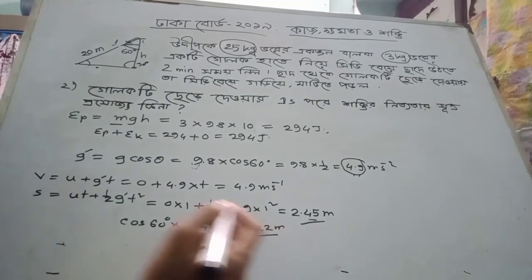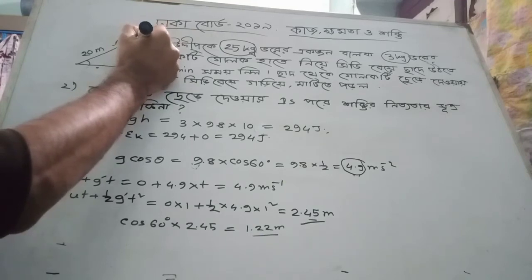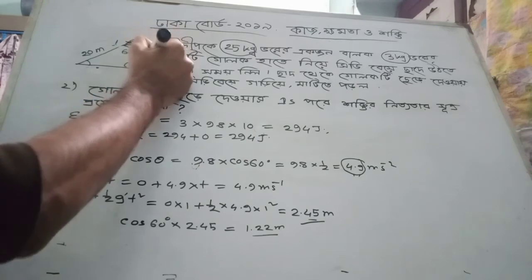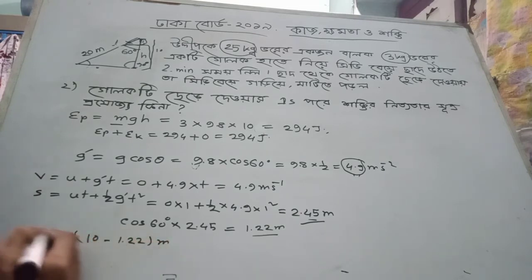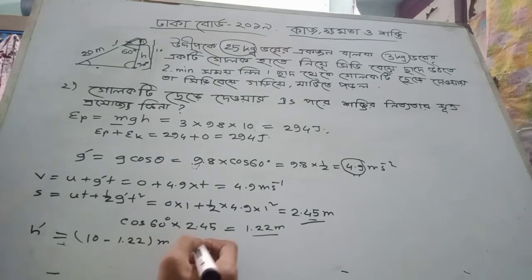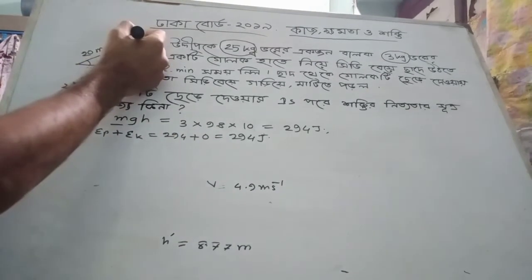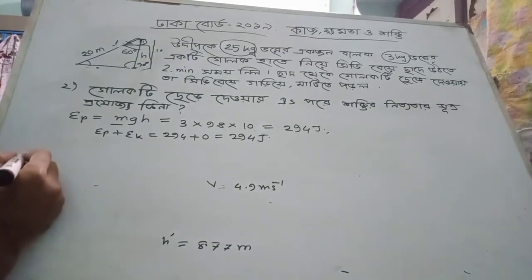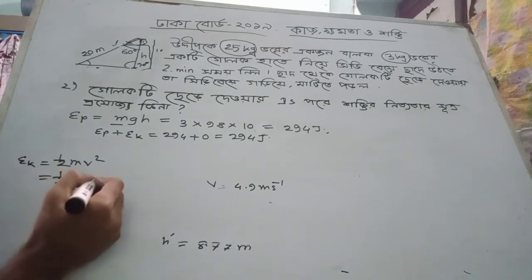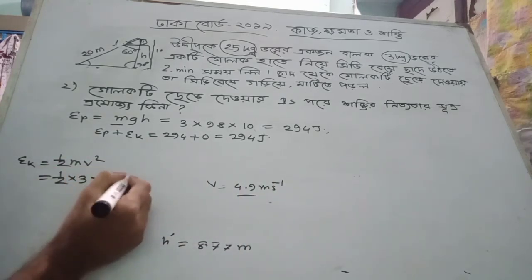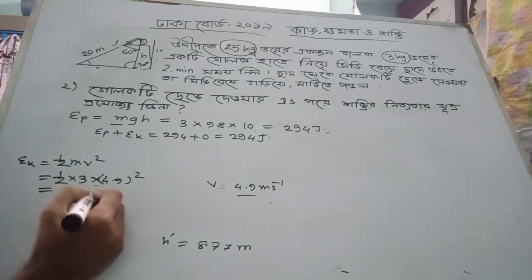1.22 meters, 1.22 meters. 1.22 meters, 8.77 meters. 1.22 meters, 1.65 meters, 1.82 meters. Half m v squared — half m into v squared. A value of 4.9 squared gives 36.62 Joules.